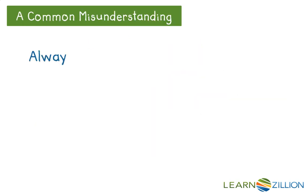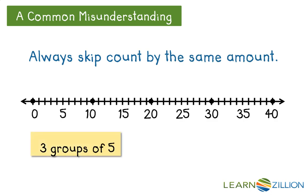A common misunderstanding is always thinking you have to skip count by the same amount. We can start skip counting by 3 groups of 5: 5, 10, 15.